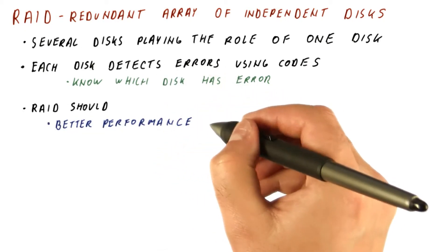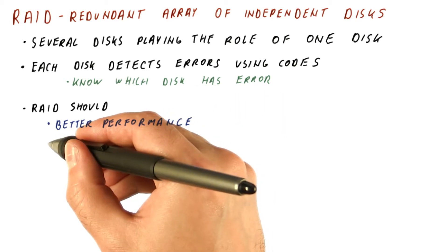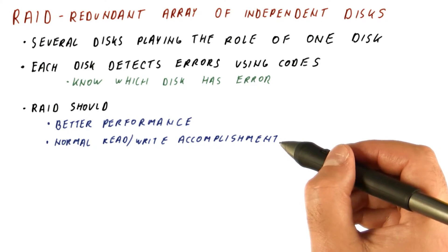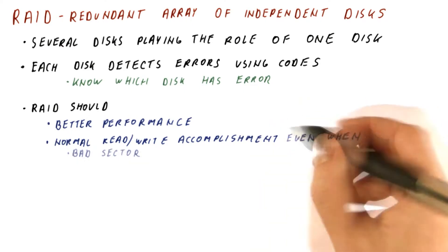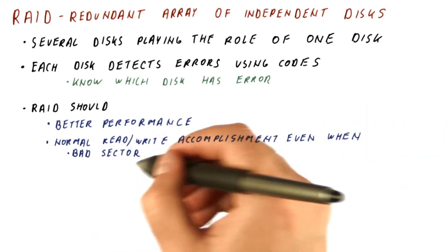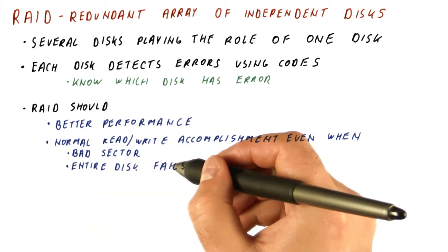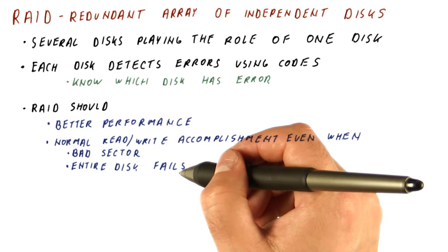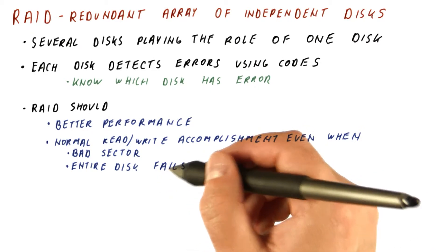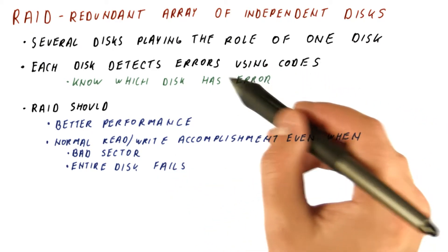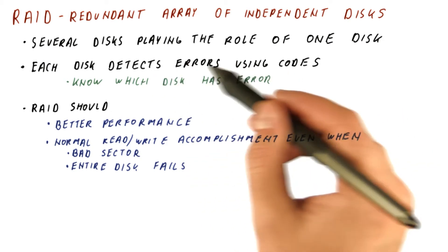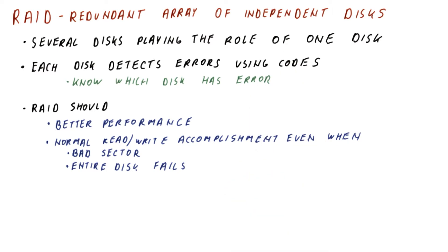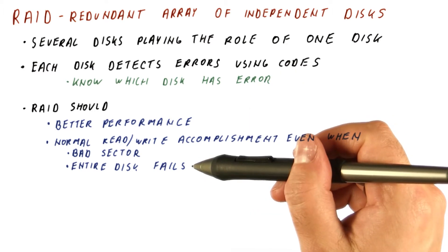What we want from RAID is better performance and normal read-write accomplishment, basically service accomplishment as far as disk is concerned, even when there are things such as bad sectors on some disks or an entire disk fails, for example because it can no longer spin and things of that nature. So things that a basic error detection and correction code attached to each sector cannot fix anymore, possibly because we can no longer get to that sector on that disk.